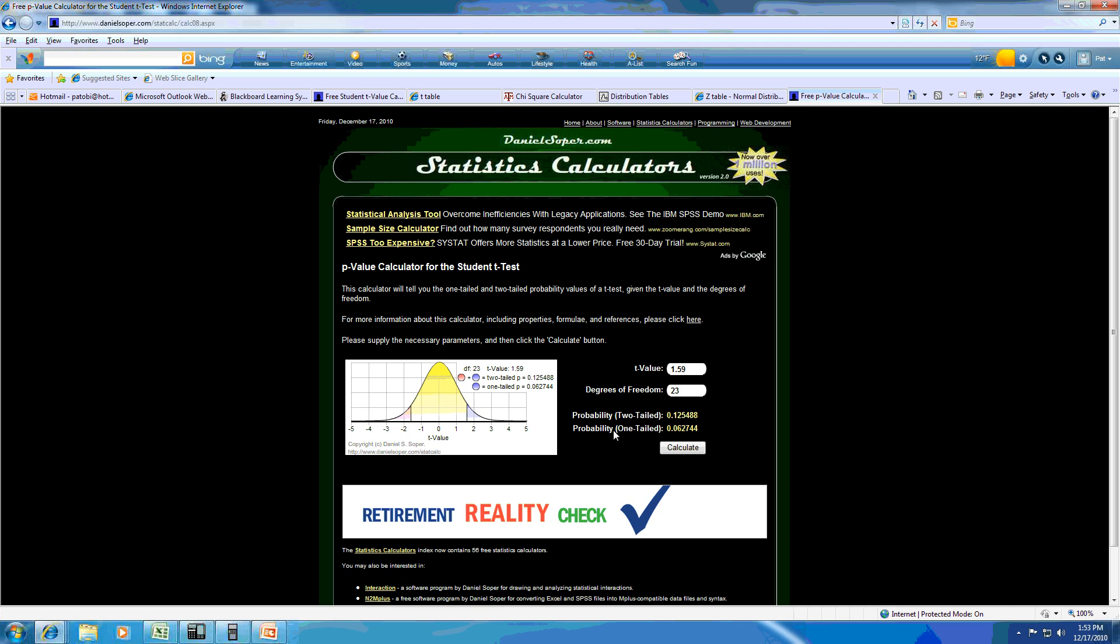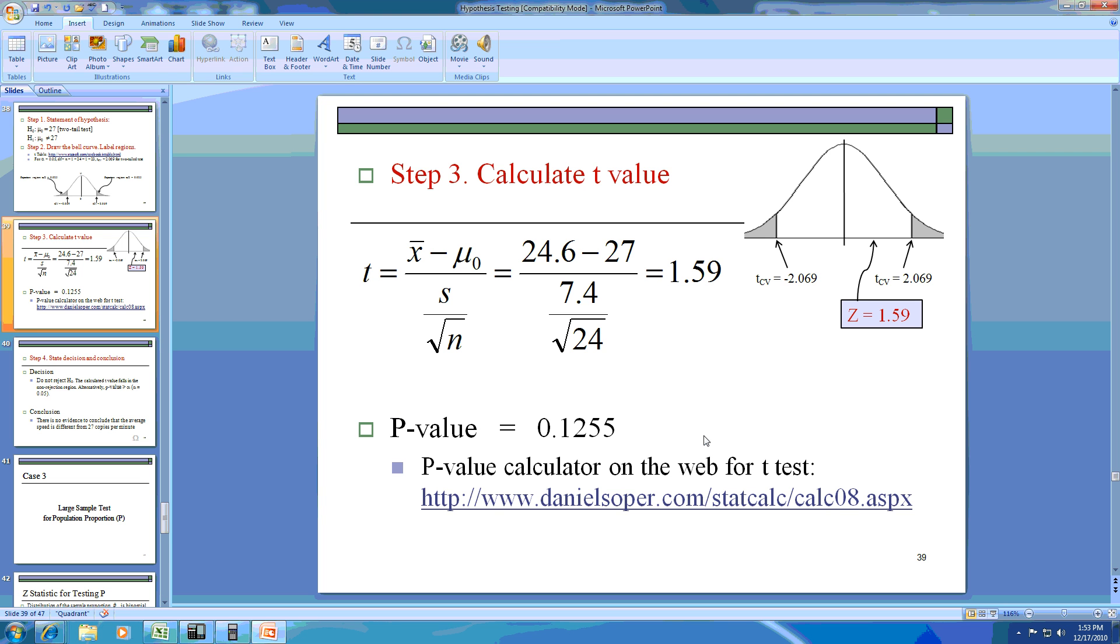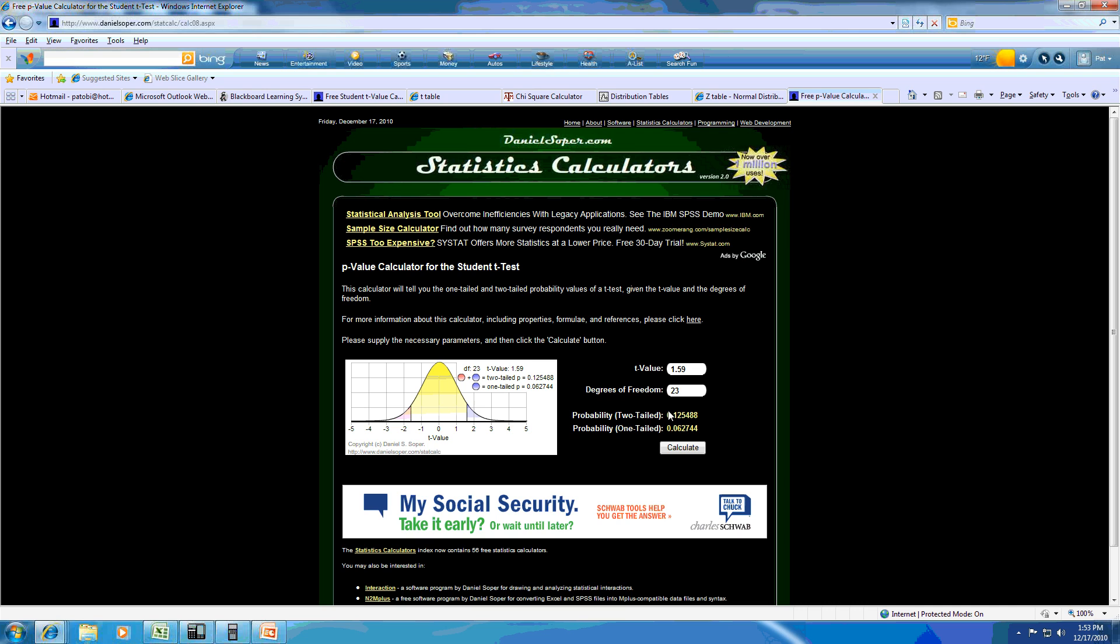And it says for two-tail, it's 0.125. For one-tail, it is 0.0627. And look again, we are carrying out a two-tail test. Because it's a two-tail test, this is our value right here, 0.1255 approximately.